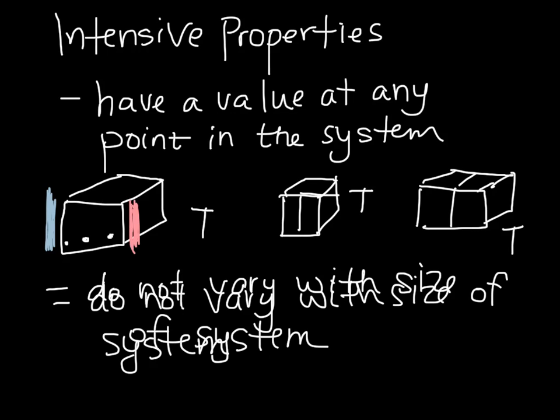Consider that we have our old system here, the cube, which is at some particular temperature T, and it's in equilibrium with its surroundings. If we double the size of the system, we still have the same temperature T. There's no reason that the temperature of the system has doubled. So intensive properties do not vary with the size of the system.